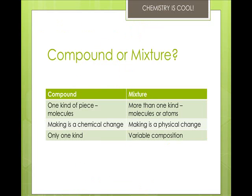So, when you're trying to determine if it's a compound or a mixture, take a look at this chart. If it's got one kind of molecule, it's a compound. If it's got more than one kind, it's a mixture. If you have to use chemical means to separate the substances, that's a compound. But if you only use physical means, that's a mixture. If there's only one kind, that's a compound. And with variable composition, it's a mixture.